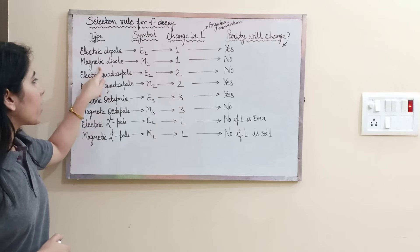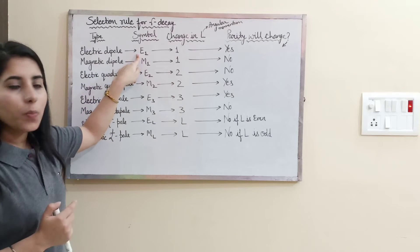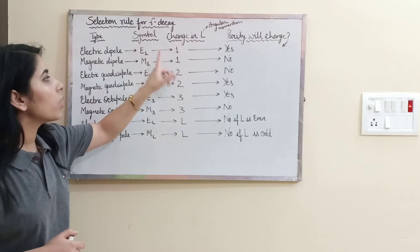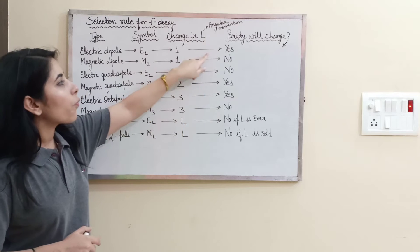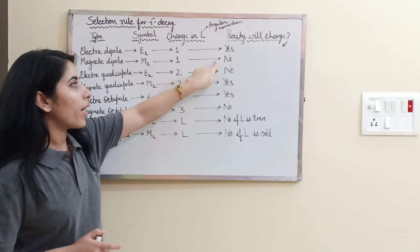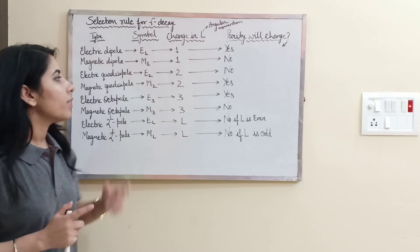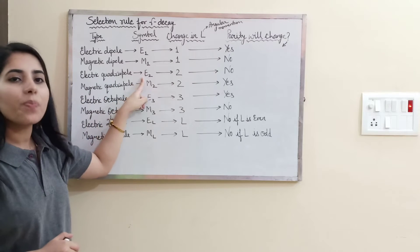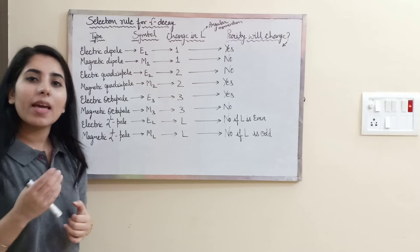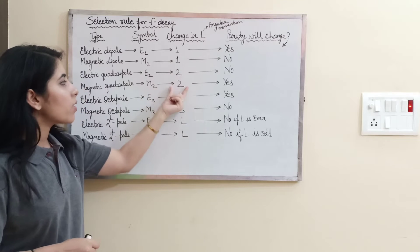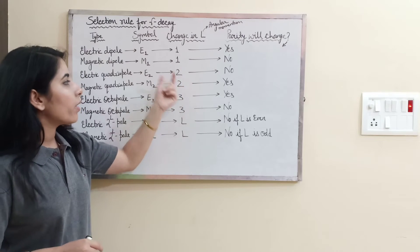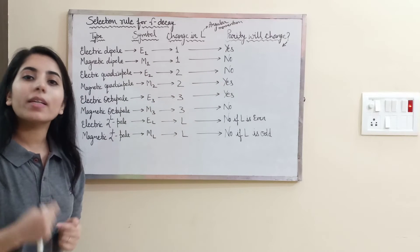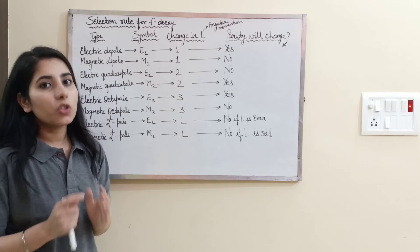Electric and magnetic dipole symbols are E1 and M1. Change in angular momentum is 1 for both. For E1, parity changes; for M1, parity does not change. For electric quadrupole the symbol is E2, and for magnetic quadrupole it is M2. Change in angular momentum is 2 for both. For E2 parity does not change, but for M2 parity does change.